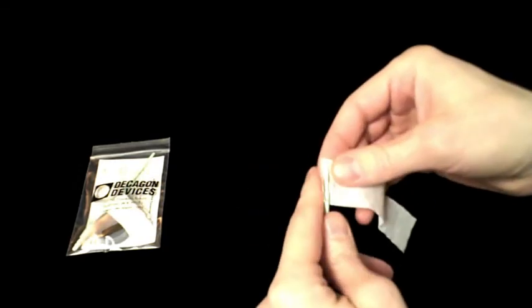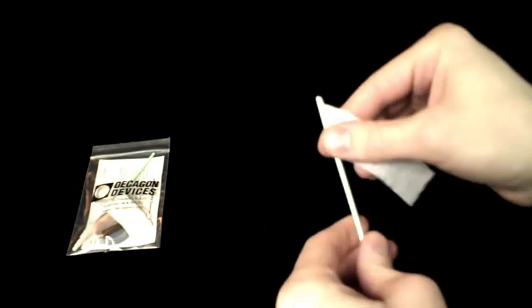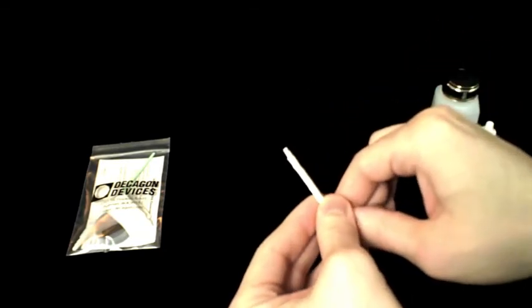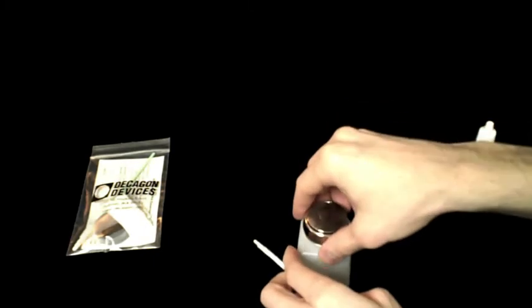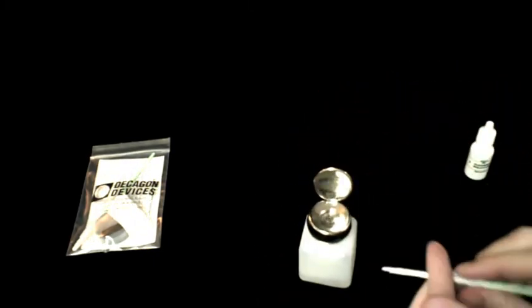Next, discard the old kimwipe strip and attach a new one to the plastic rod. This time, however, dampen the kimwipe using distilled water instead of the Decagon cleaning solution. Distilled water rinses away any residual contamination that may be left on the sensor block.